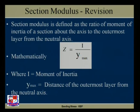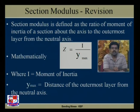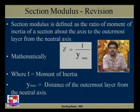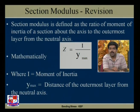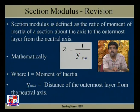Now, section modulus: section modulus is defined as the ratio of the moment of inertia of a section about its axis to the distance of the outermost layer from the neutral axis. It is defined as Z = I / y_max, where y_max is the distance of the outermost layer from the neutral axis and I is the moment of inertia.